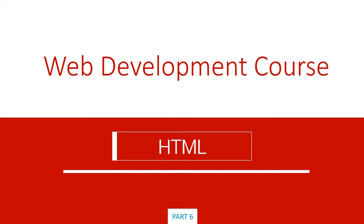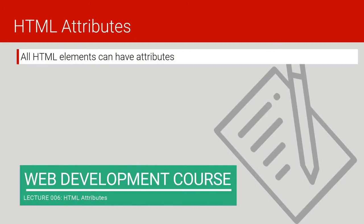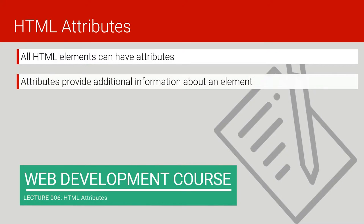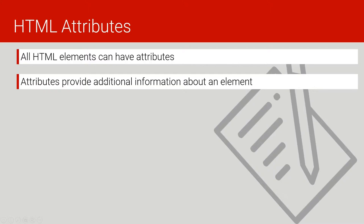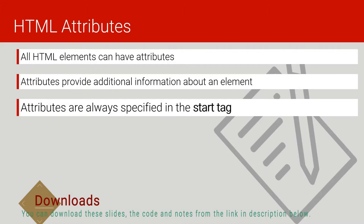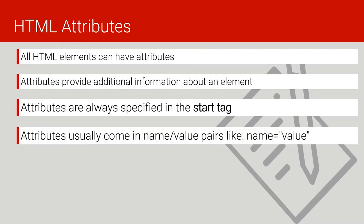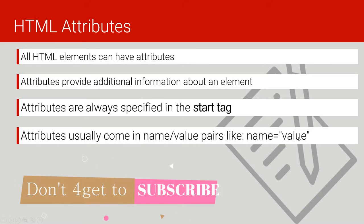In this lecture we're going to continue with the HTML section and learn about HTML attributes. All HTML elements can have attributes — attributes provide additional information about an element. Attributes are always specified in a start tag, and they usually come in name and value pairs.